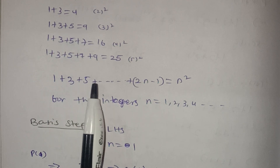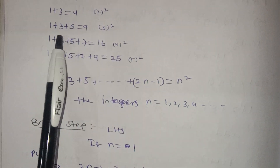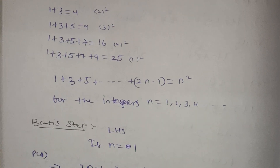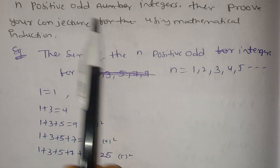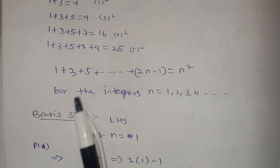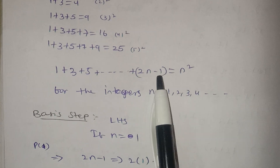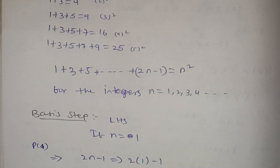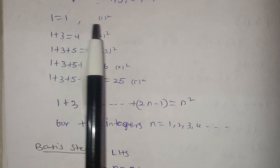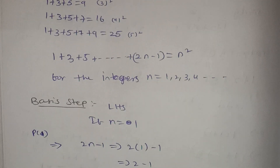So what is the pattern with these odd numbers? The statement is: 1 plus 3 plus 5 plus up to (2n minus 1) equals n squared. We can verify: 1²=1, 2²=4, 3²=9, and so on.